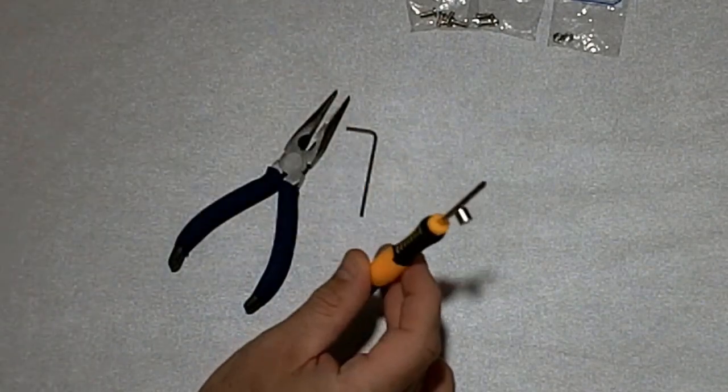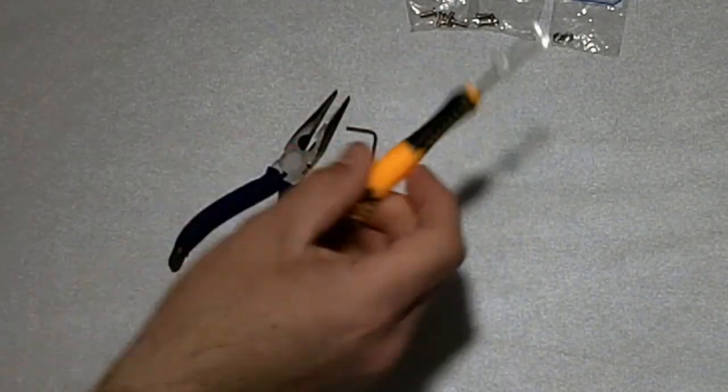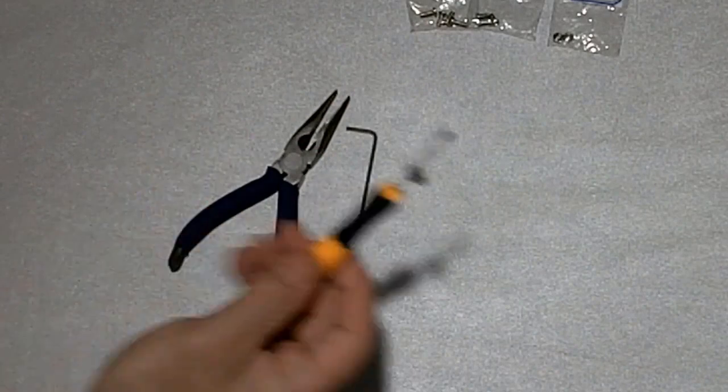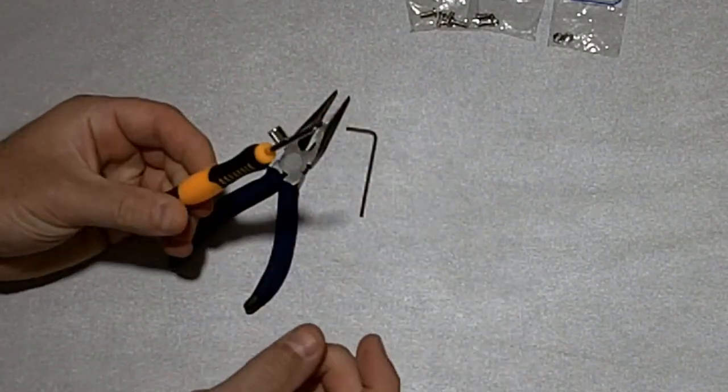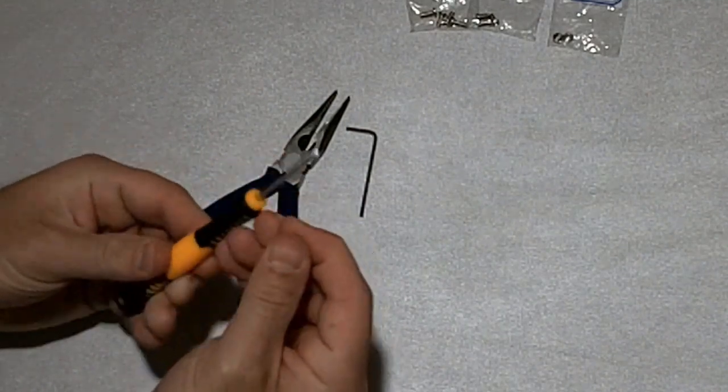So I could just put the screw on the tip and then tilt it any which way and it wouldn't fall off. So if you have some kind of strong magnet like this, this may help when you're assembling the kit.